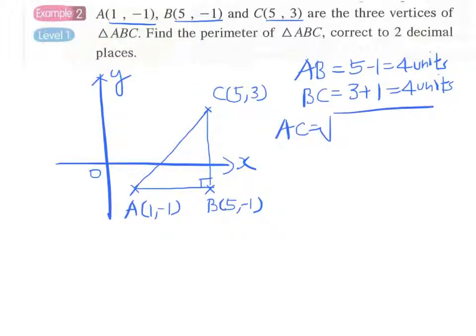Actually in this problem we can simply apply the Pythagorean theorem because this is 4 and this is 4—we don't need to apply the distance formula.